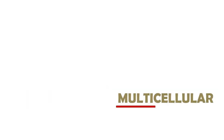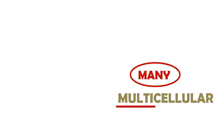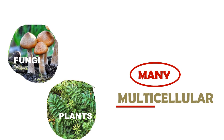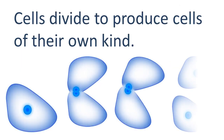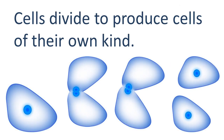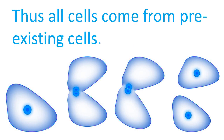Now, what is a multicellular organism? Multi means many — many cells form an organism. We humans, along with plants, fungi, and animals, are called multicellular organisms. The cell theory states that all cells come from pre-existing cells.